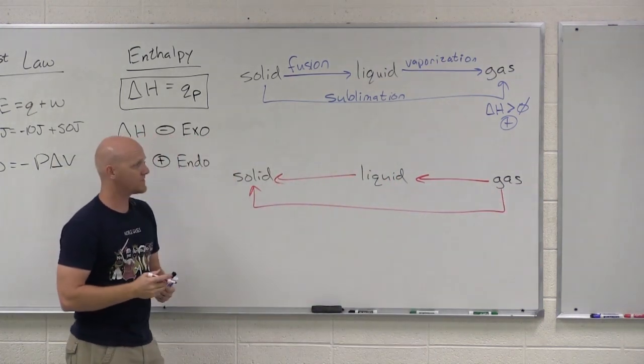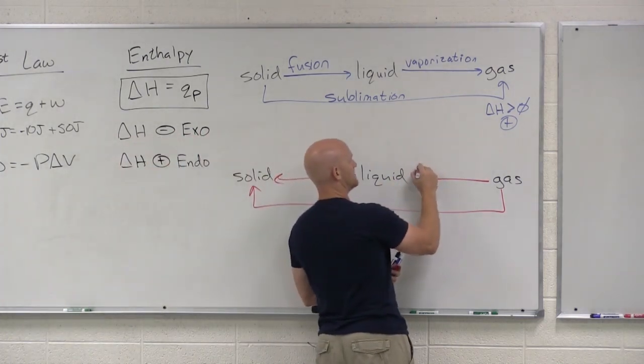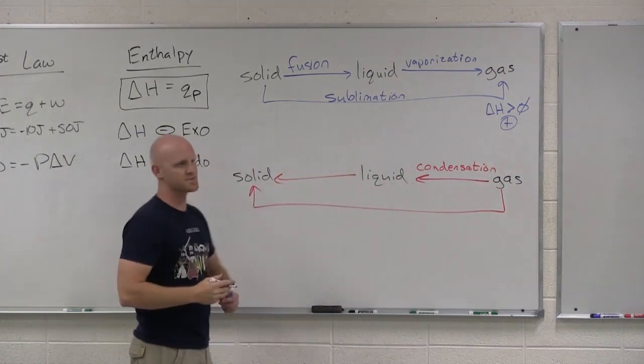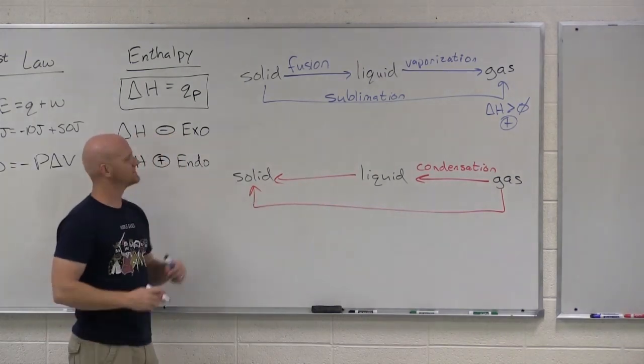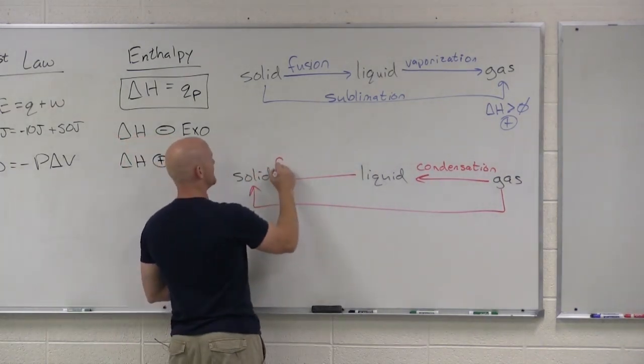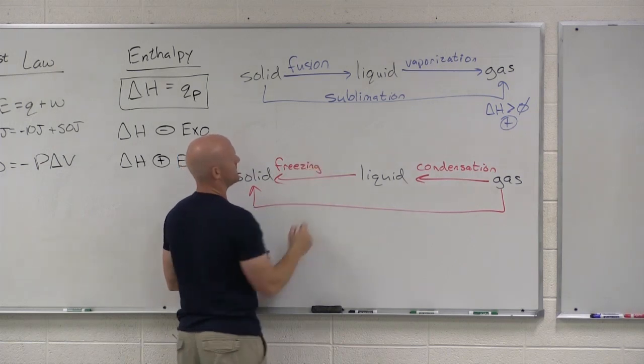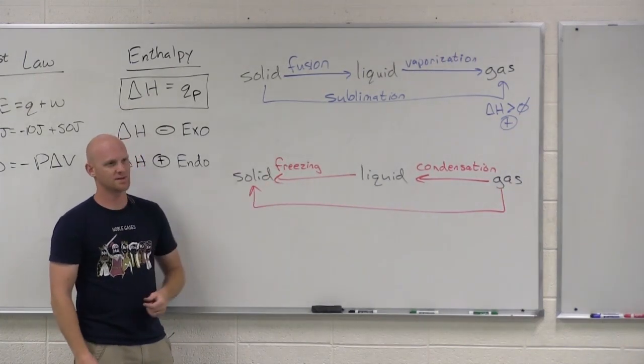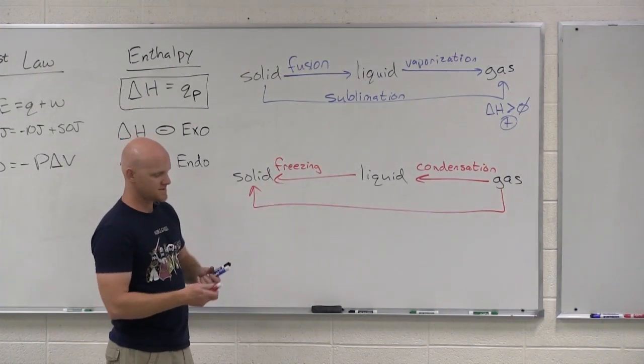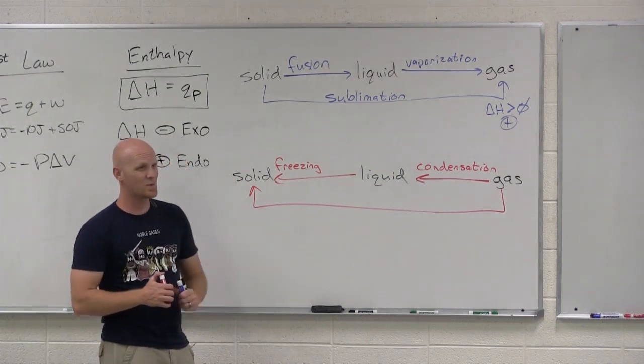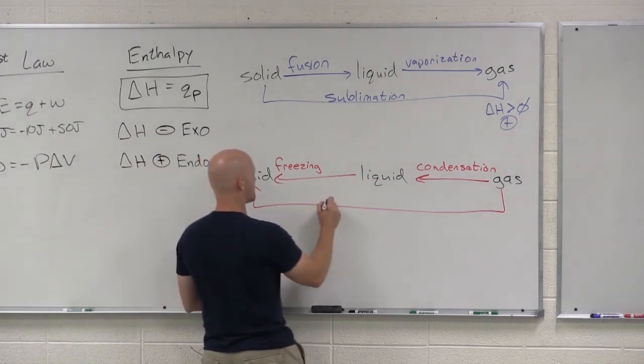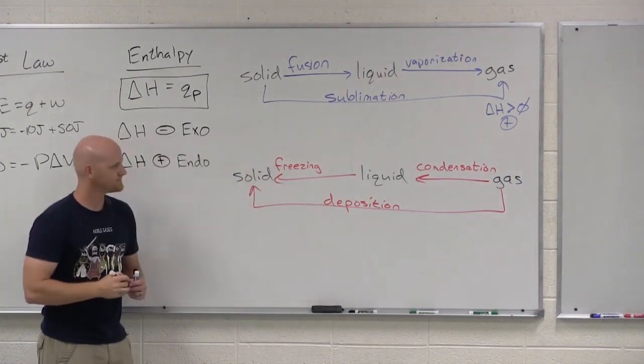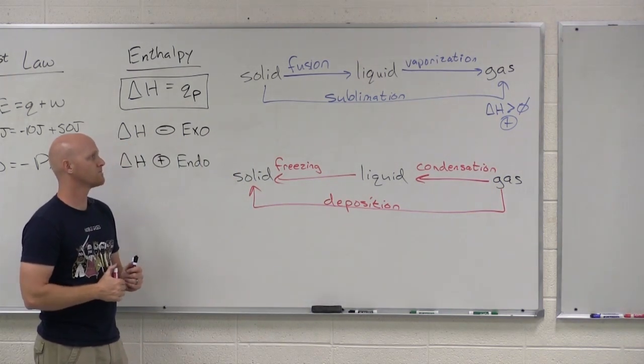If you do the exact reverse processes here, gas to liquid, liquid to solid, gas to solid. First of all, you got to know their names. So gas to liquid, what do we call this? Condensation. Liquid to solid. Crystallization. But crystallization is kind of a technical term we use for it. And this is one example where more commonly than using the technical term, we'll use the kitchen term and call it freezing. Gas to solid, though. It's the one we all forget. Deposition. So deposit that in your head. Sometimes called vapor deposition.